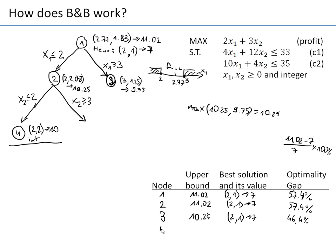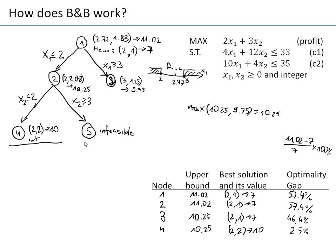After node 4, our best solution is now (2, 2) with value 10. The upper bound is still 10.25. The optimality gap is (10.25 − 10) / 10 × 100% = 2.5%. Solving node 5 — with x1 ≤ 2 and x2 ≥ 3 — reveals that the problem is infeasible, so we don't need to explore this branch any further.